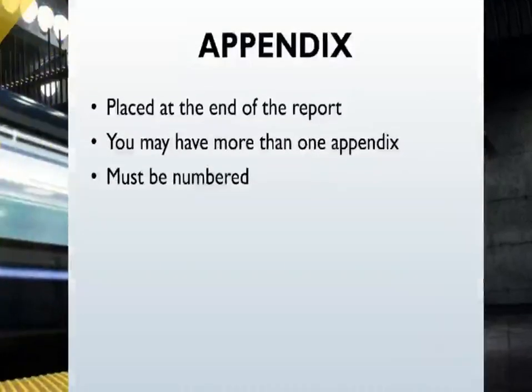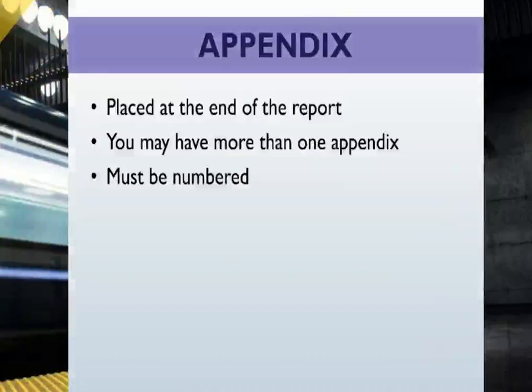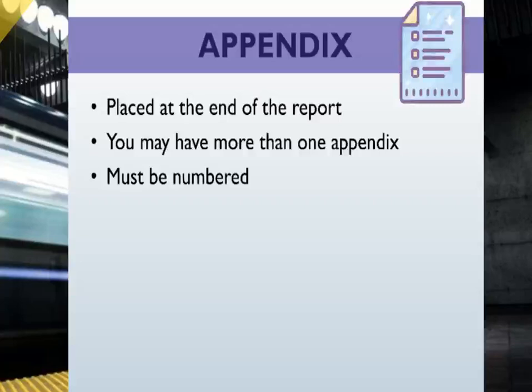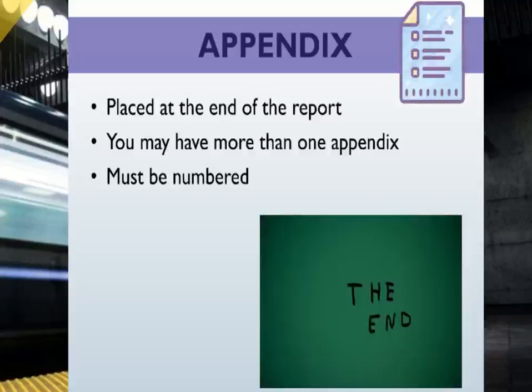An appendix is placed at the end of the report. This is additional information that is too detailed for the body of the report. If there is more than one appendix, the series is called the appendices. Number the appendices and use this number when referring in the text — for example, Appendix 5.